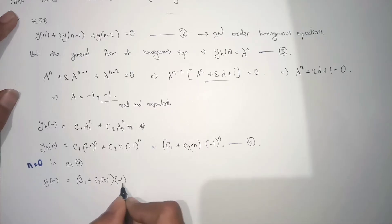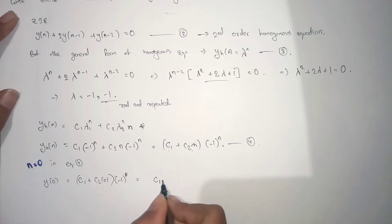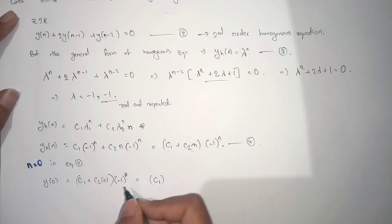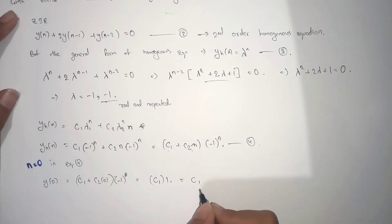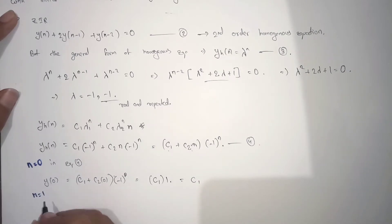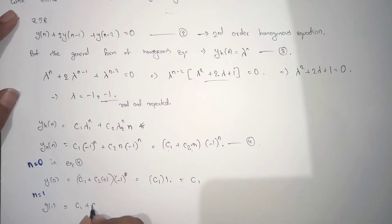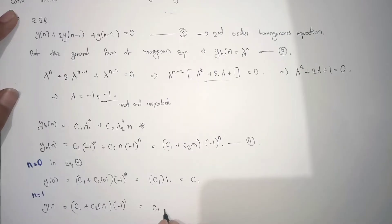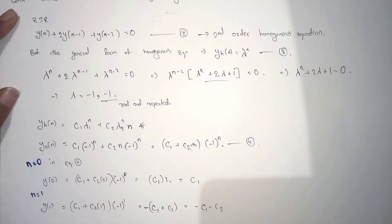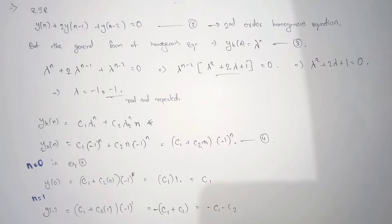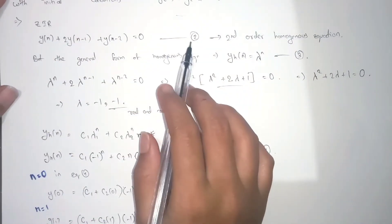Since (-1)^0 = 1, we get y(0) = C1. Now substituting n = 1, we get: y(1) = (C1 + C2·1)·(-1)^1 = -(C1 + C2) = -C1 - C2. So we have two equations from the homogeneous form.